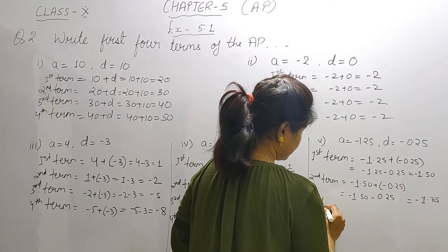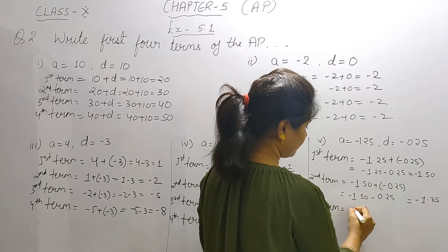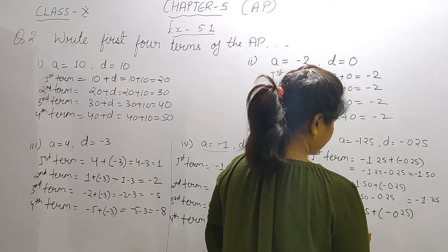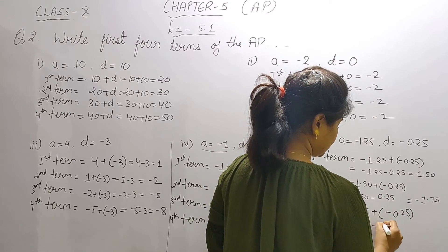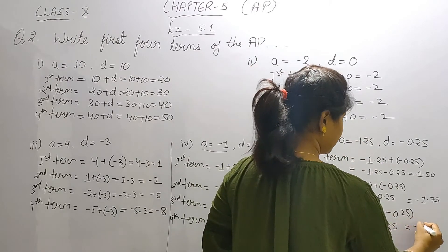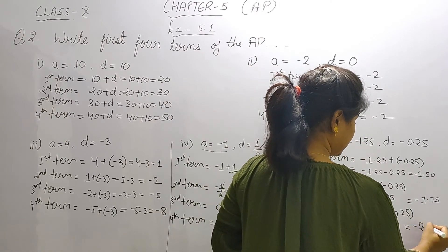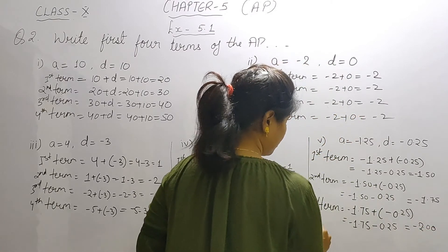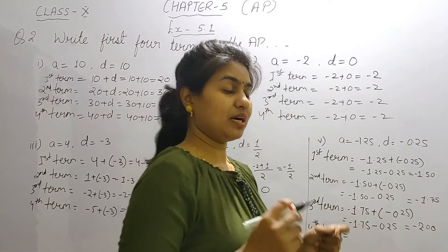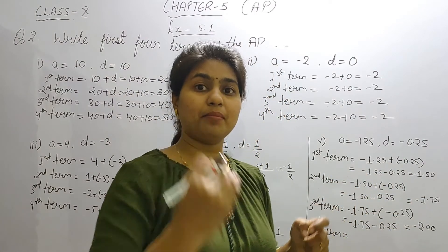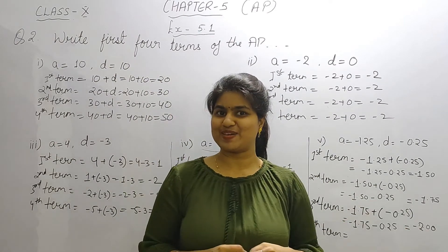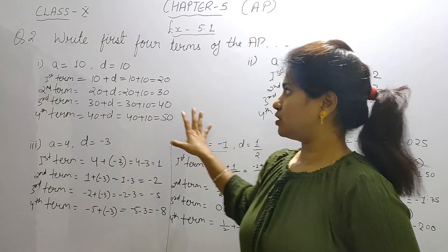Let's find the third term fast: minus 1.75 plus minus 0.25 — minus minus becomes plus — so minus 1.75 minus 0.25 equals minus 2.00. For the fourth term: minus 2.00 plus minus 0.25. I'm not going to solve it — this is your homework and you have to do it by yourself. That's all about question number 2.